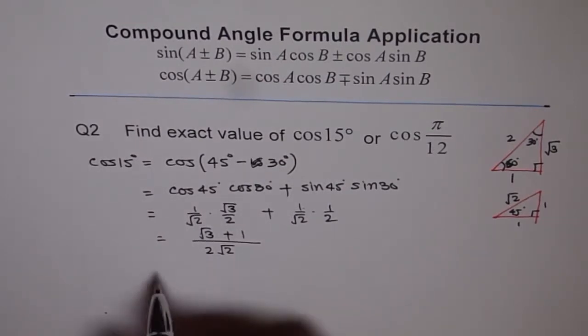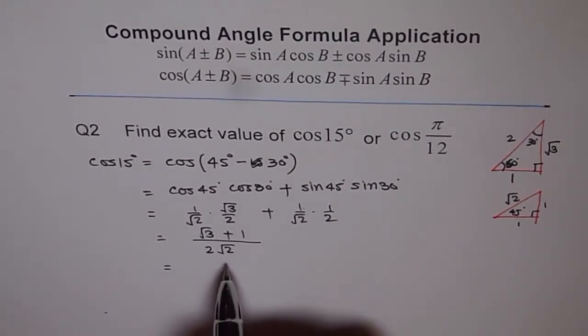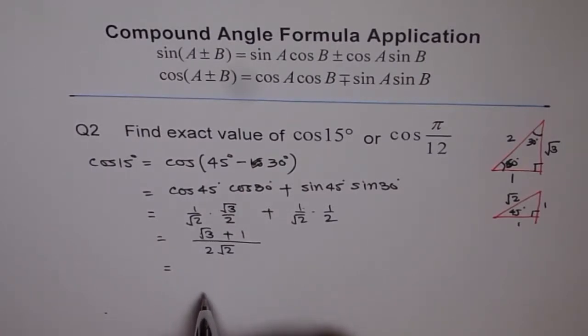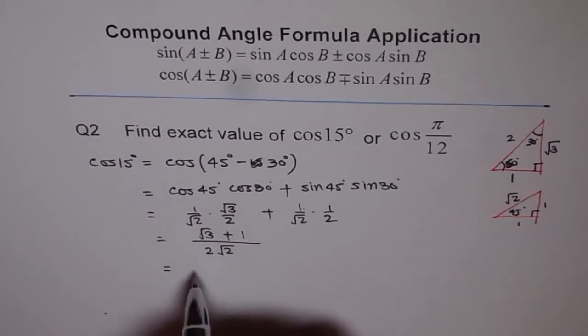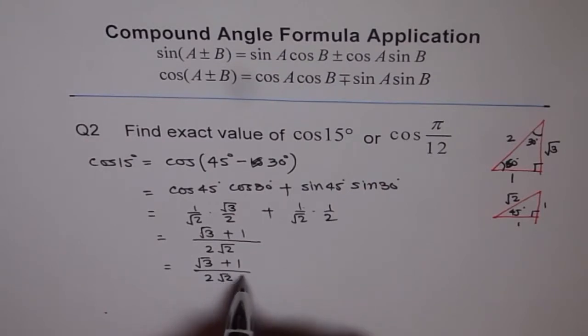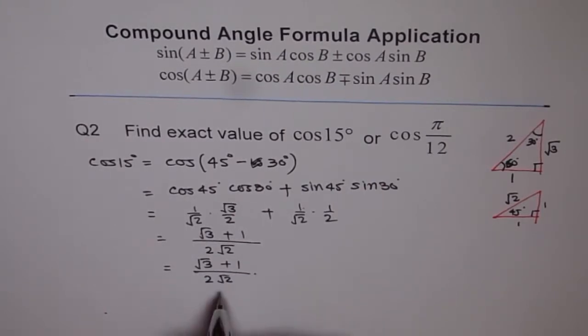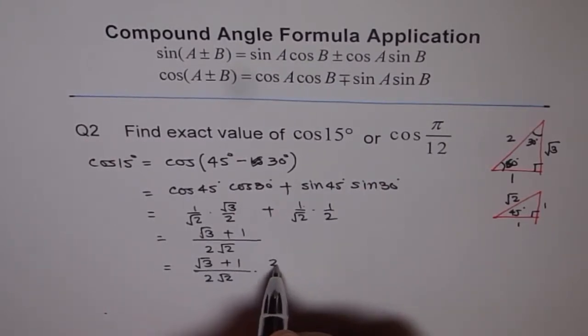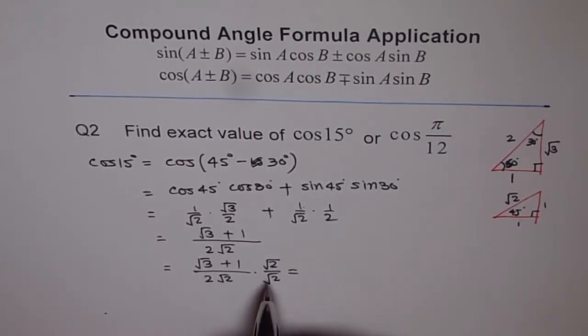Now that's the answer. But a better way to write is to get rid of square root 2 from the denominator. We call it rationalization. You all know about it. Let's rationalize it so that we write our answer without any radical in the denominator. To do that we will multiply and divide by square root 2.